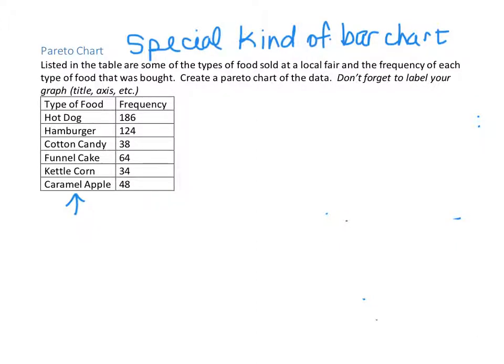And the tallest category, and I'm just going to use some numbers to rank these. The tallest category is the hot dogs, then the hamburgers. And then the next category would be the funnel cake. And then the next category would be the caramel apple. And then our next category would be the cotton candy. And then the last one is going to be the kettle corn.